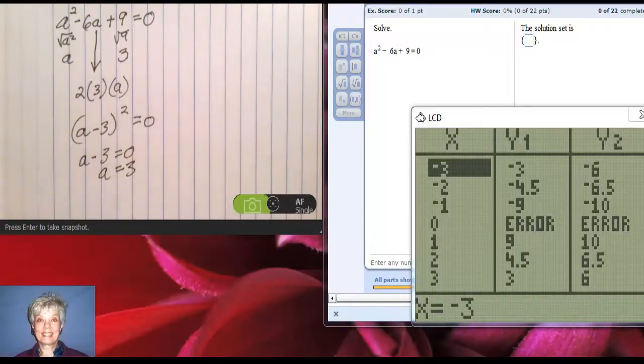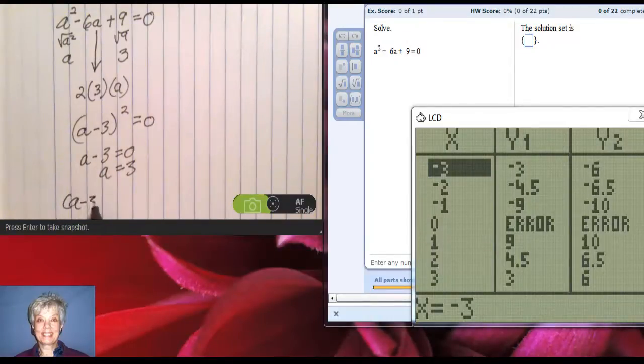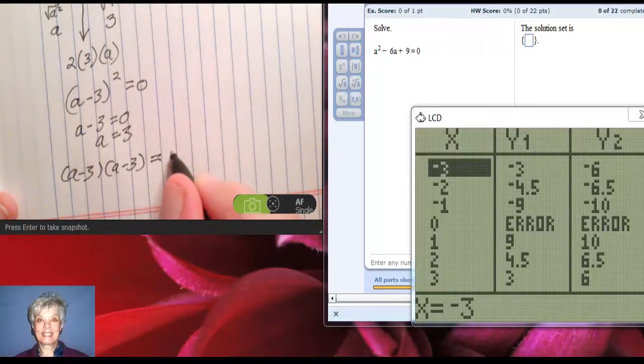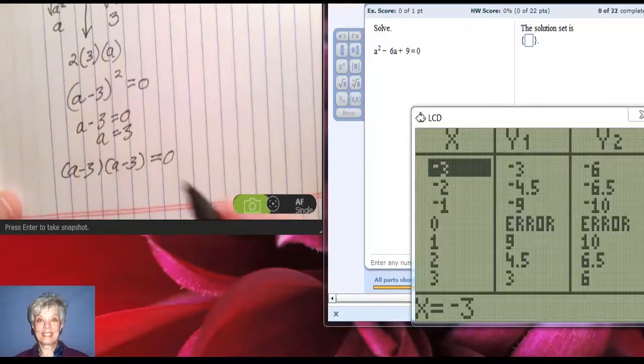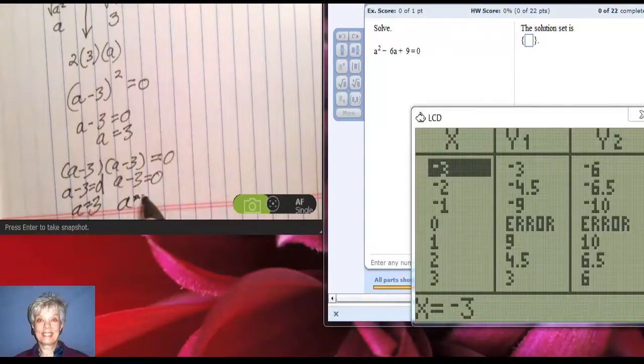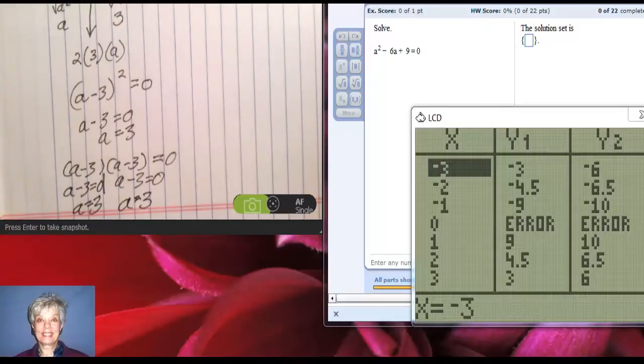Now what that says is that a² - 6a + 9 factors into (a - 3)(a - 3). And of course a² - 6a + 9 = 0, so I can't forget the equals 0. Then set each factor equal to 0: a - 3 = 0, a - 3 = 0. So when you solve this little equation you get a = 3. And when you solve this little equation you get a = 3. And that's the only thing you can get because these two factors are identical.